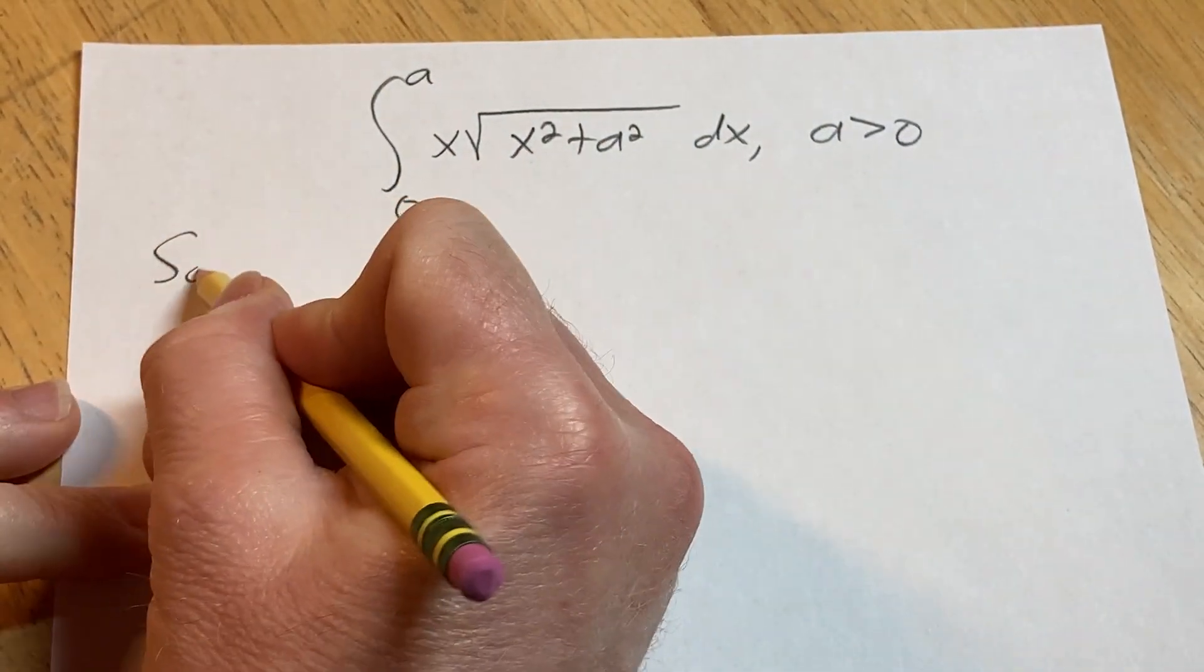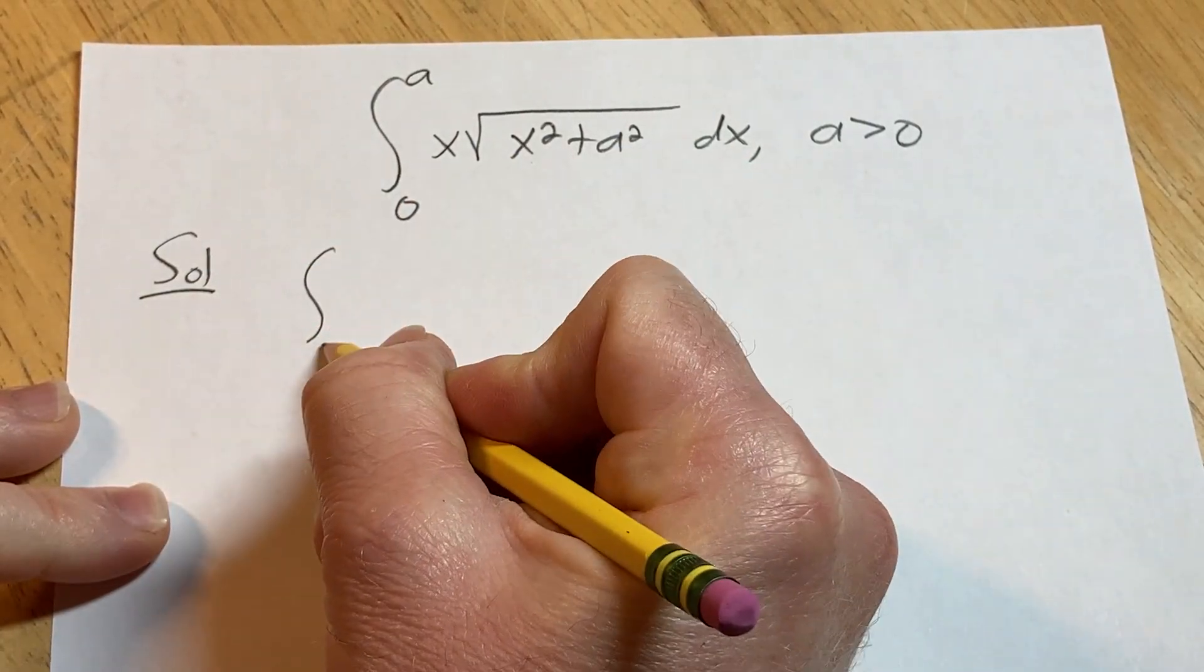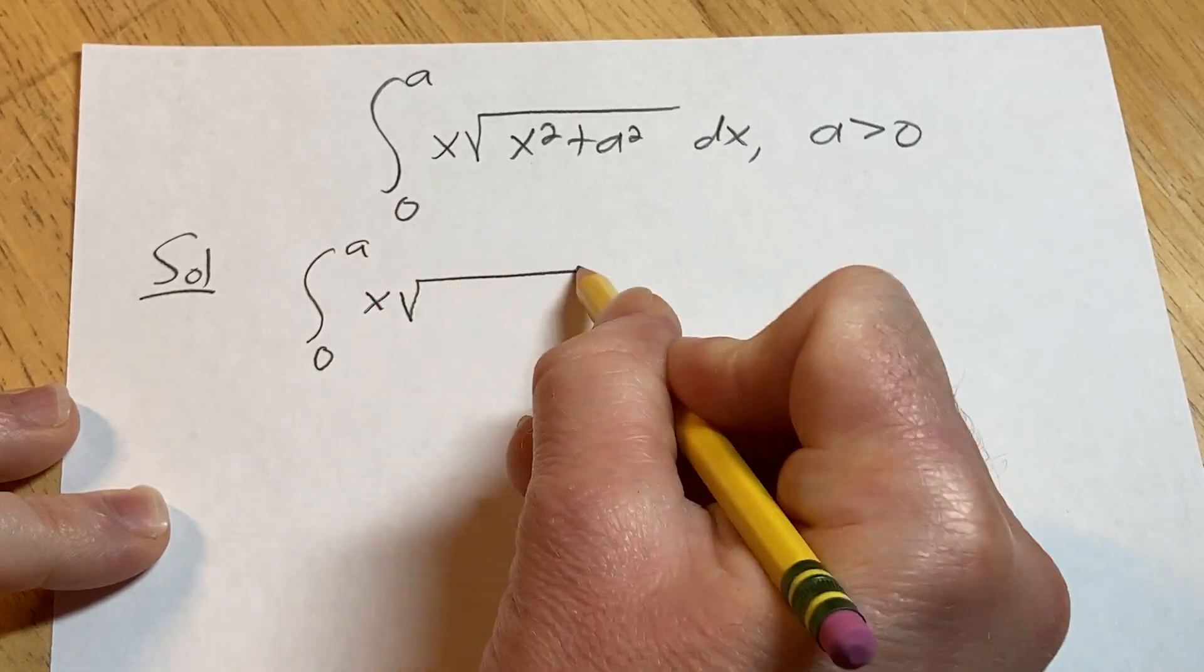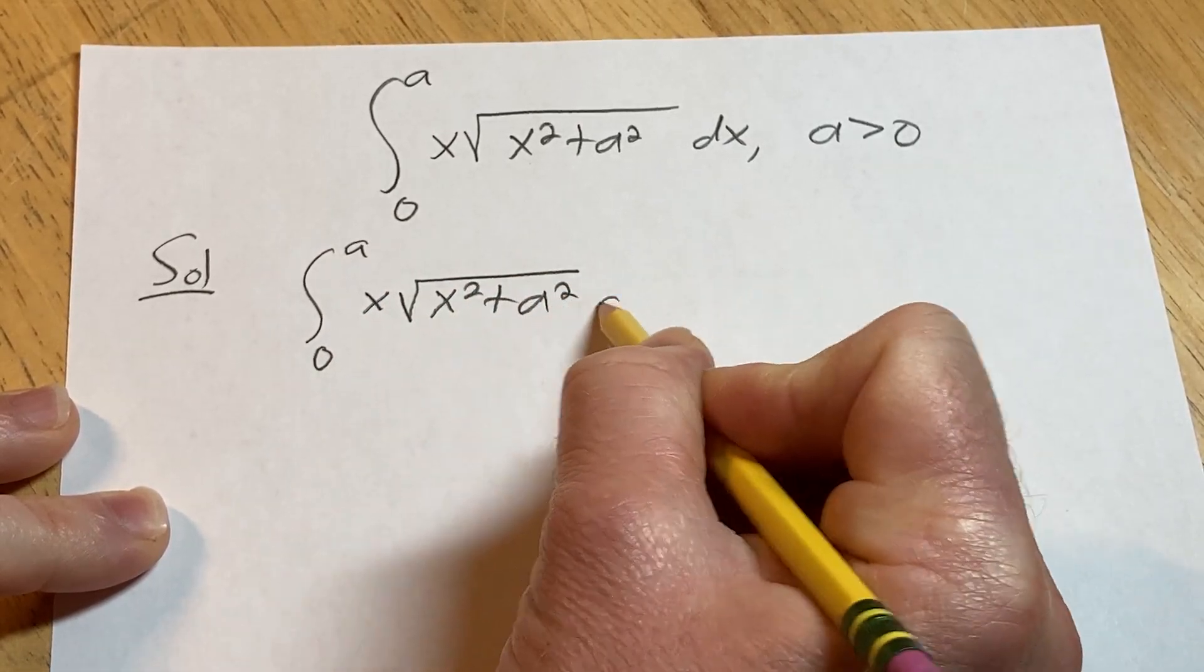Let's just go ahead and work through it. Solution. So I'm going to write it again. We have the definite integral from 0 to a of x times the square root of x squared plus a squared dx.